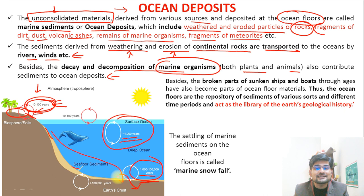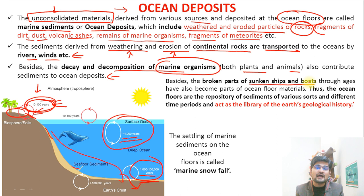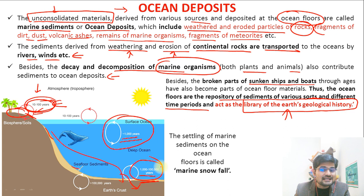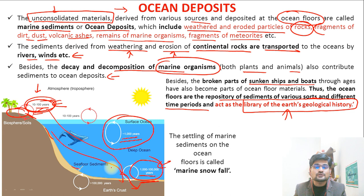Besides these, broken parts of sunken ships and boats are also present. During the age of discovery over the last 600 years, many ships and boats have sunk, and their material is also part of the same unconsolidated material — a result of human actions. The ocean floors are a repository of sediments of various sorts from different time periods and act as the library of Earth's geological history.